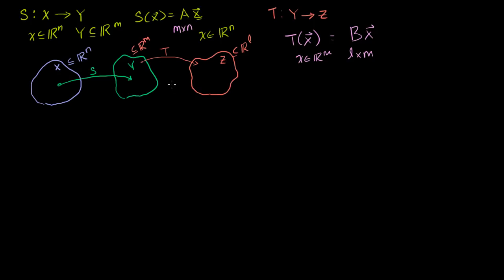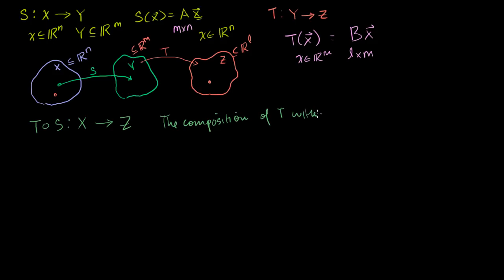A very natural question might arise: can we construct some mapping that goes all the way from set X to set Z? We'll call that the composition of T with S — written as T circle S — a mapping from X all the way to Z. We're essentially combining the two functions to create a mapping that takes us from X to Z.